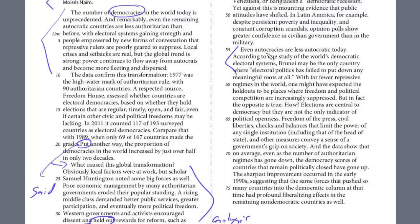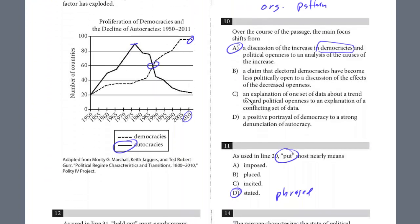Looking at lines 56 to 59: 'Even autocracies are less autocratic today. According to one study of the world's democratic electoral systems, Brunei may be the only country where political electoral politics has failed to put down any roots.' This is definitely about political openness and democratic electoral systems. It's slightly indirect — if Brunei is the only country where they failed to put down roots, that means all other countries have established meaningful roots for electoral politics. This is a widespread trend. You get it by elimination too — the other choices don't really address it. The answer for question 13 is D.